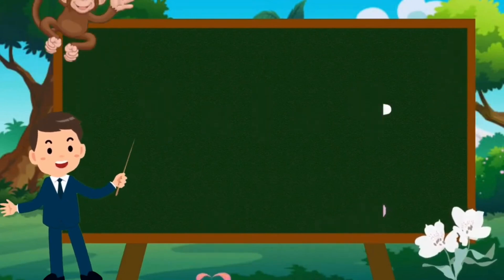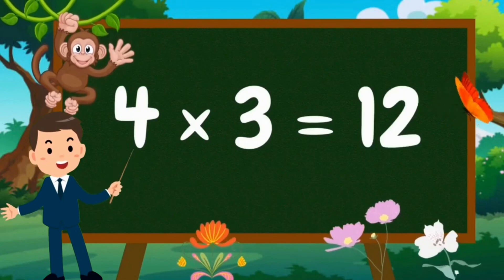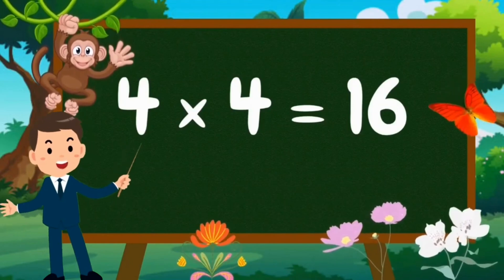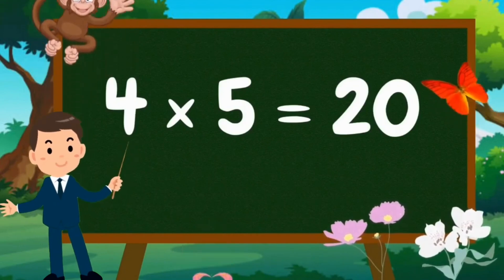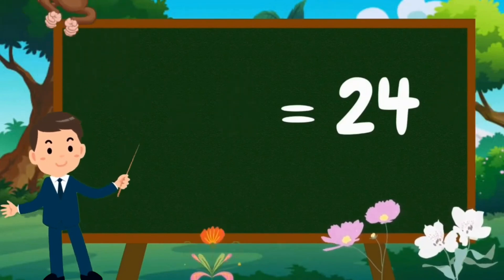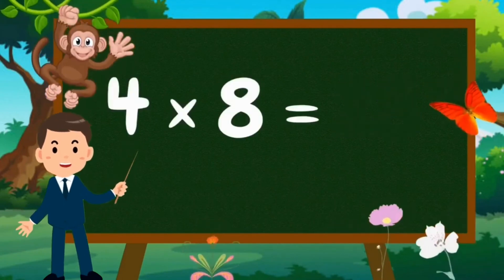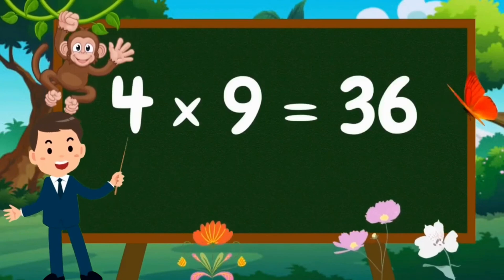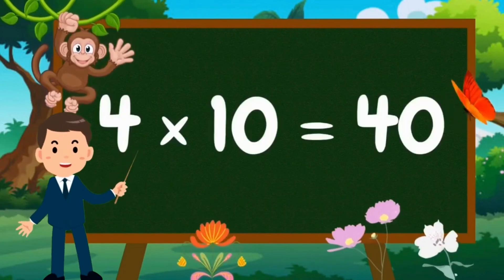Table of Four. Four ones are four. Four twos are eight. Four threes are twelve. Four fours are sixteen. Four fives are twenty. Four sixes are twenty-four. Four sevens are twenty-eight. Four eights are thirty-two. Four nines are thirty-six. Four tens are forty.